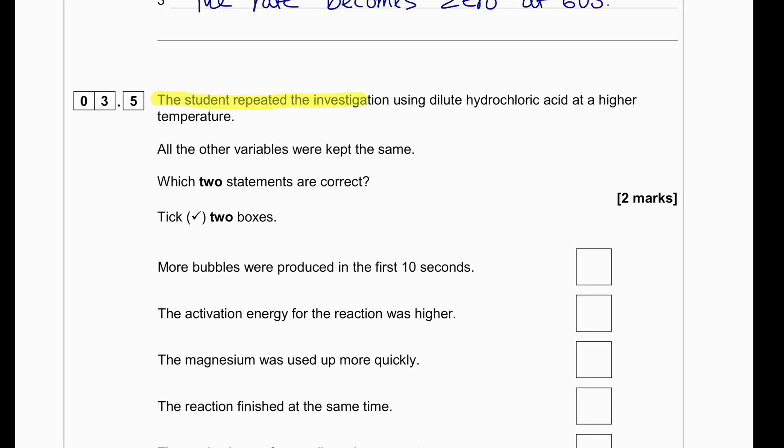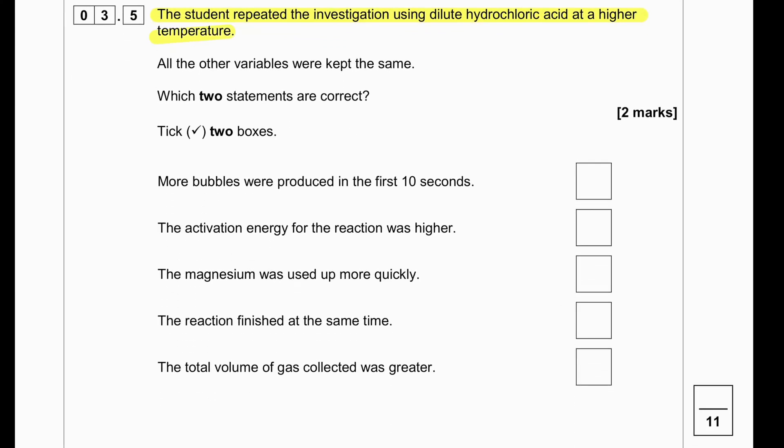The student repeated the investigation using dilute hydrochloric acid at a higher temperature. Because we are using a higher temperature then the rate of reaction is going to be faster. All other variables were kept constant. That means that the dilute hydrochloric acid is of the same concentration as before. Which two statements are correct? At higher temperature, rate of reactions are faster. So more bubbles are going to be produced in the first 10 seconds. This is a correct statement.